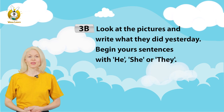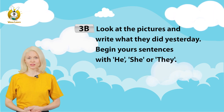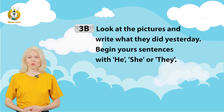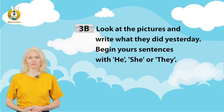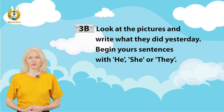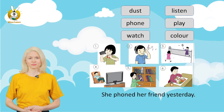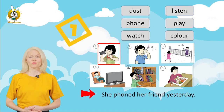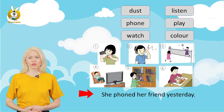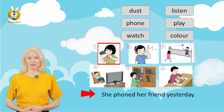Three B. Look at the pictures and write what they did yesterday. Begin your sentences with he, she, or they. One: She phoned her friend yesterday.